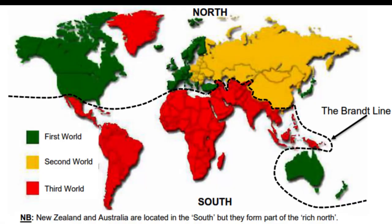Now look at this map that visually shows you the North-South Divide. The black dotted line is called the Brandt Line — an imaginary line that divides rich countries in the North from poor countries in the South. Notice that Australia and New Zealand are geographically located in the southern hemisphere but are regarded as part of the North, because they are developed countries. As I mentioned earlier, as a nation becomes economically developed it may become part of the North regardless of geographical location.